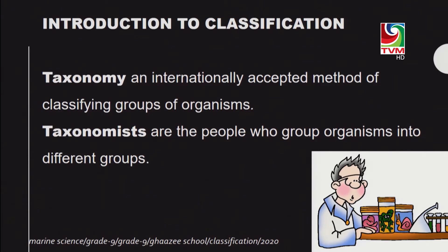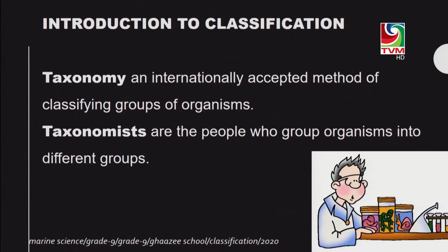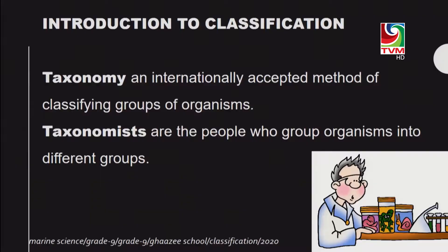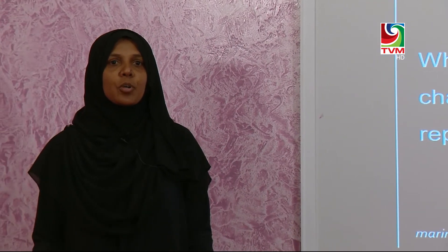Before we start, we will look at two main terms. The first term is taxonomy — an internationally accepted method of grouping organisms into different taxa or different phylums. The people who do this work are called taxonomists, defined as people who group organisms into different groups.